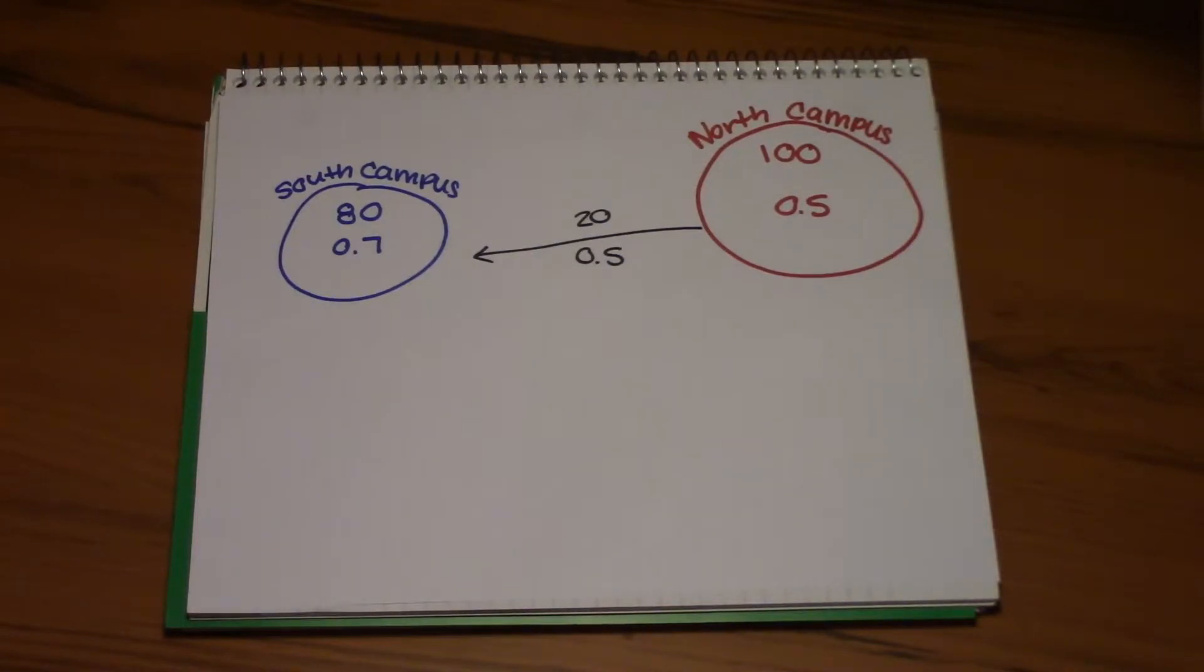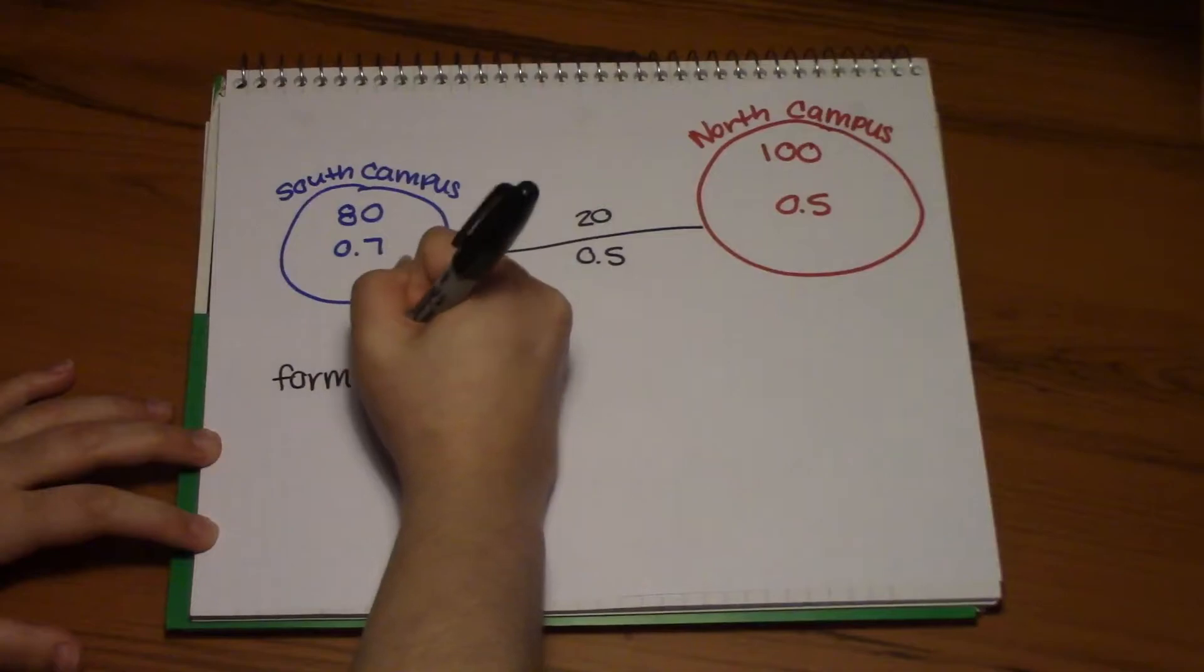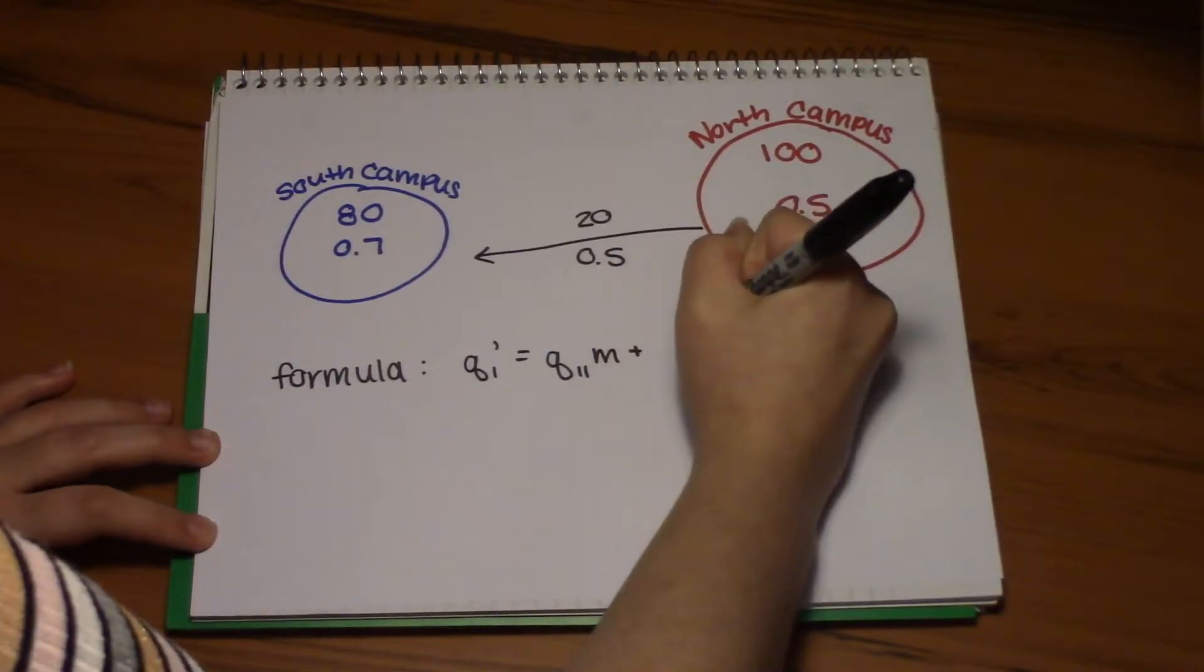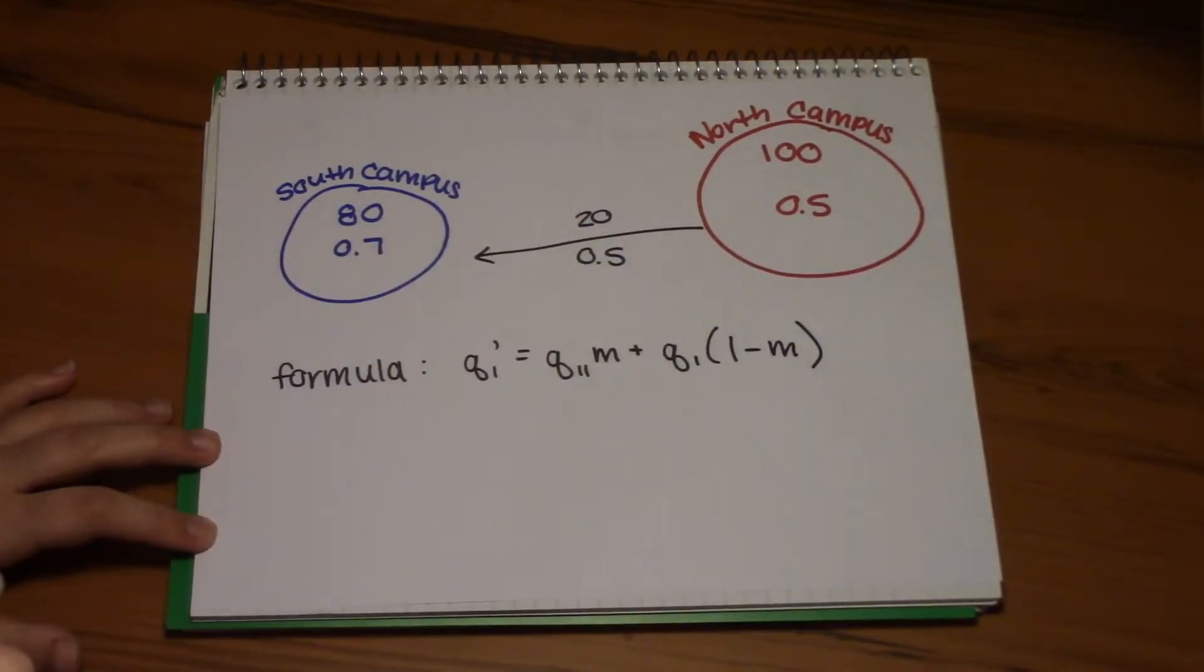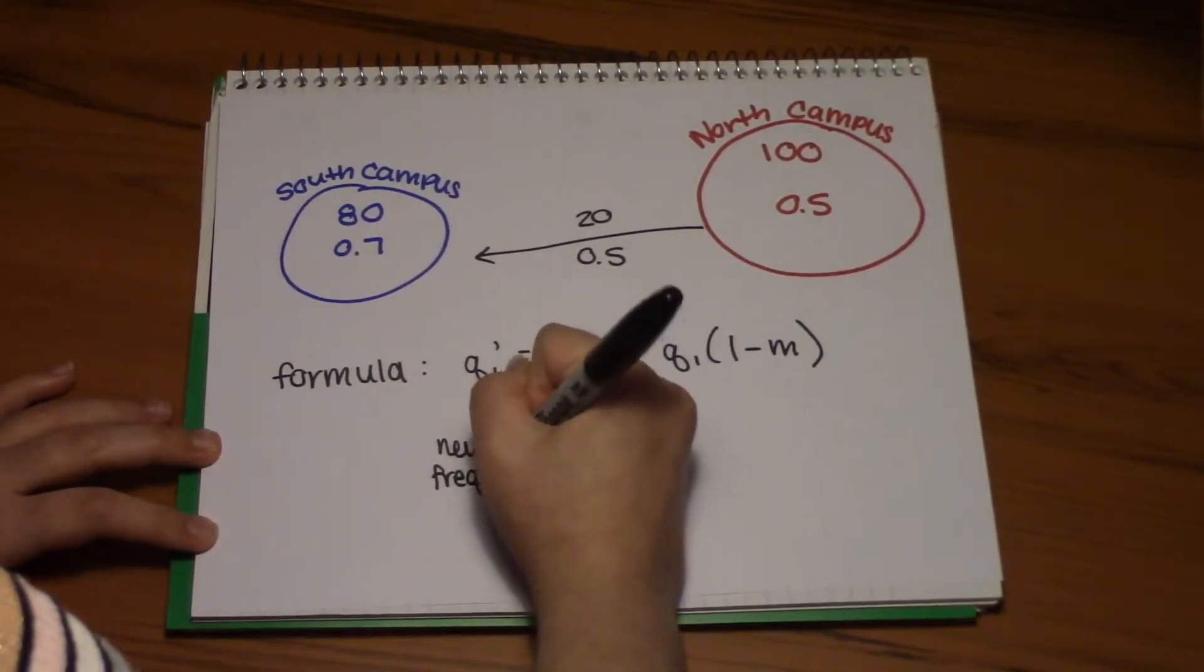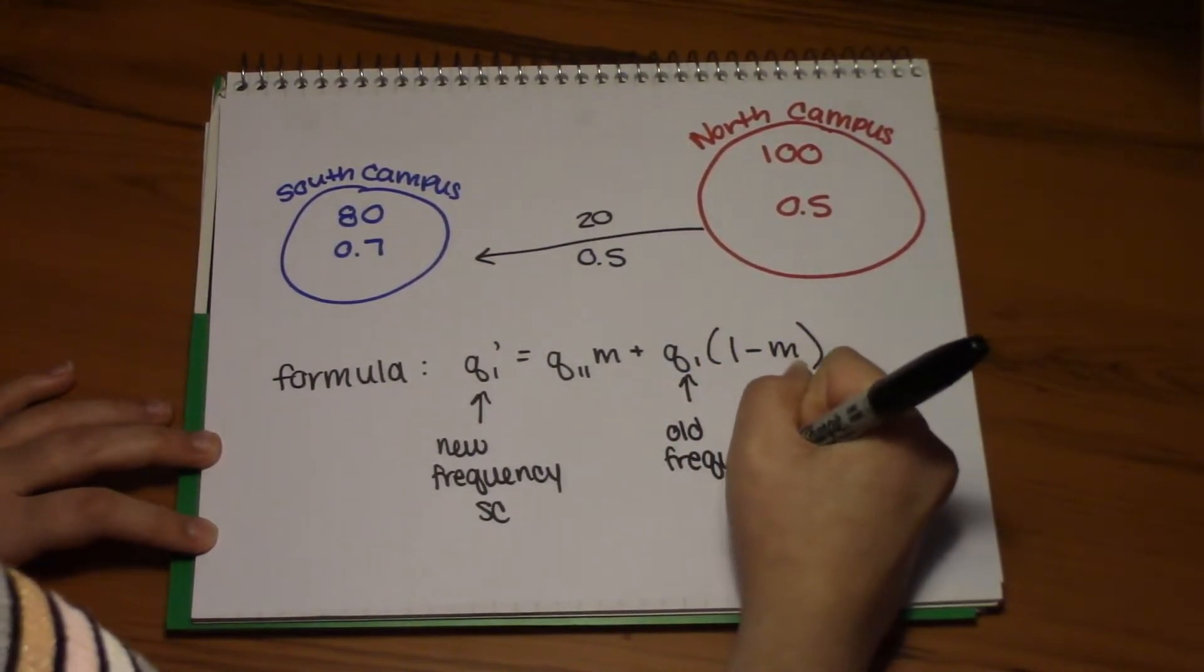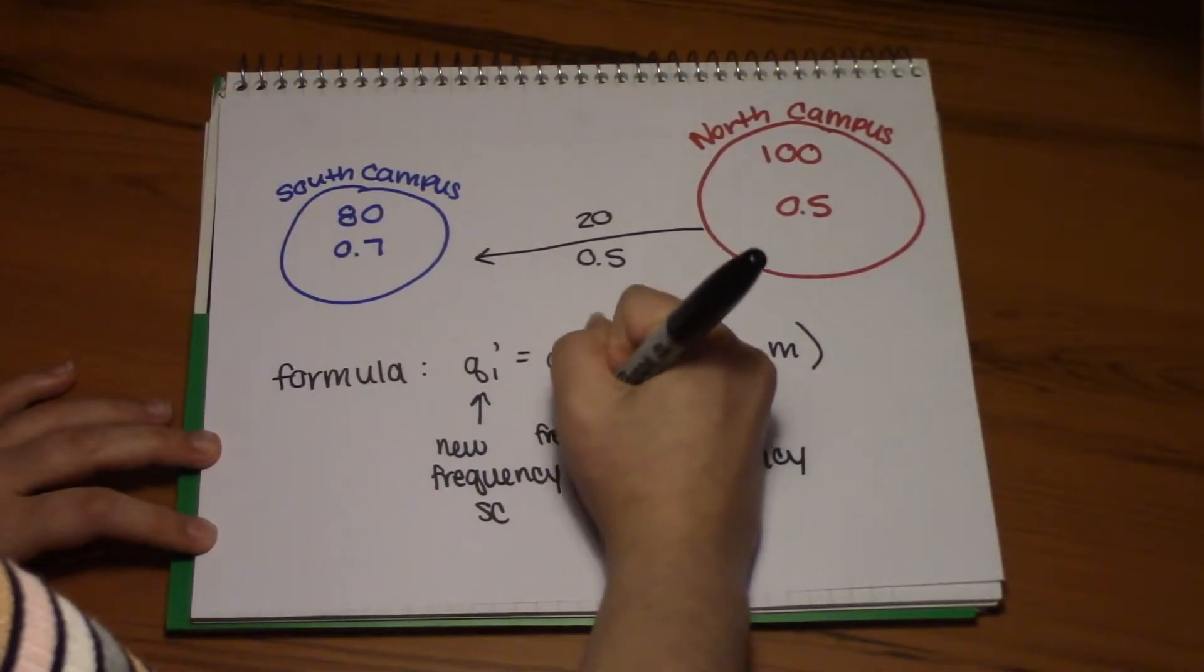Now let's talk about the migration formula. I'm just going to write it out here so we can go over the individual parts of the formula and identify what numbers belong where. So we have q1 prime equals q2 times m plus q1 times 1 minus m. So in terms of identifying which parts this equation are what, this q1 prime is going to be our new frequency in our south campus population since that is our focal population. That's the one we're looking at. q1 is just our old frequency in our south campus population. And then q2 is our north campus frequency because that is our secondary population that we're drawing individuals from.